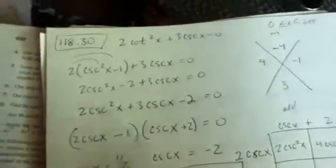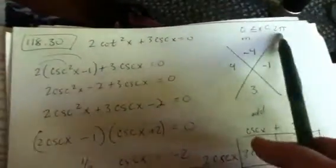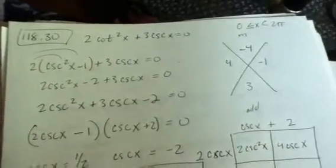Lesson 118, number 30. I'm supposed to solve this for x, for x between 0 and 2π. Sadly for me, I don't have my unit circle here, but I think I can work around it.